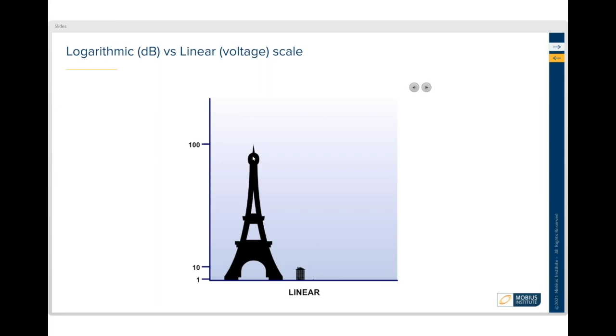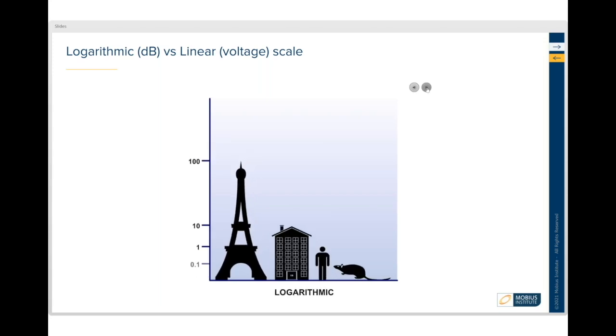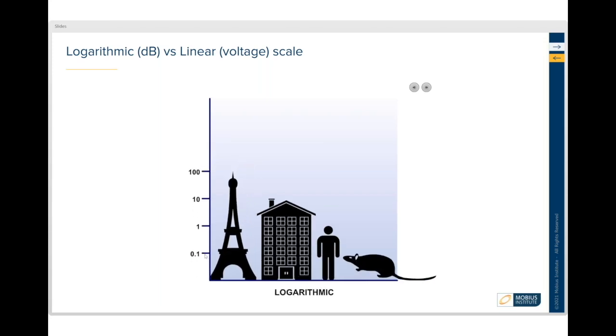So instead we use and talk about the dB scale. And what we're doing is we just change it so that there's an equal, you know, 0.1 to 1 to 10 to 100. Of course we go up to a thousand and so on. And now we can see the tower, the building, the man, and the rat all on the same scale because we're now using a logarithmic scale. And dBs are a way of representing logarithms.